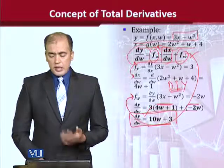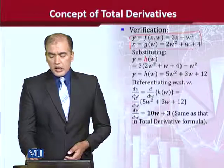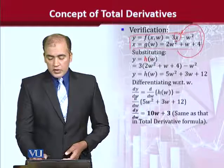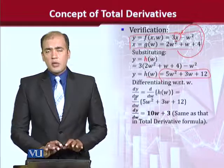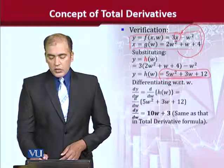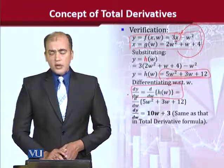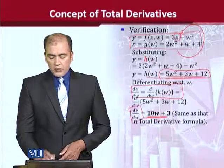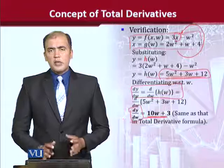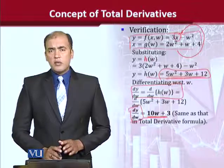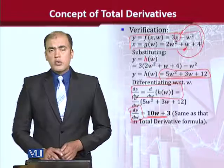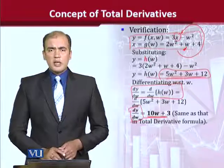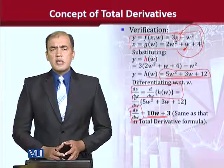We can also verify this result. Using the two functions we discussed, if we substitute the value of x in terms of w into the main function, the whole function becomes expressed in terms of w alone. We can then take its ordinary derivative, and if we compare it with the answer we got before — the derivative of y with respect to w — we see they are the same. So we can either use the total derivative formula or substitute the intermediary variable directly to get the same answer. This is how we calculate the total derivative. Thank you.